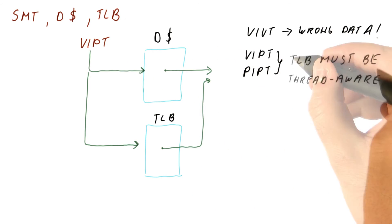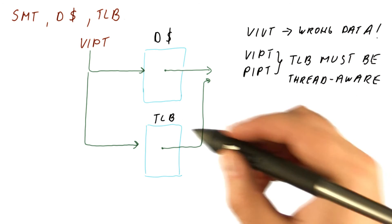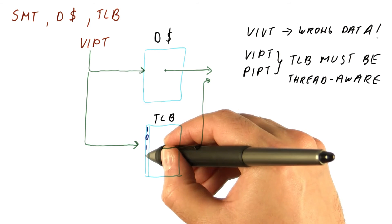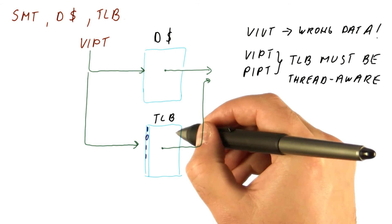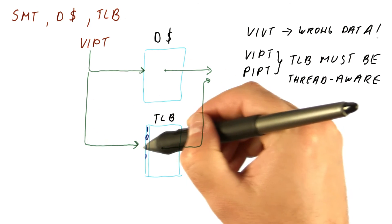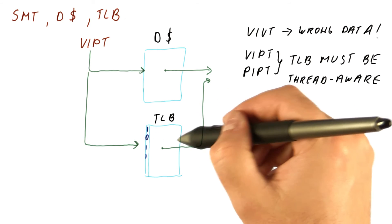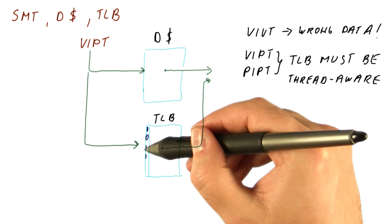That can be done by adding a single bit to each entry that tells us which of the two threads this mapping is for. In that way, indexing into the TLB with the virtual address, we'll find a set in the TLB that has multiple entries.